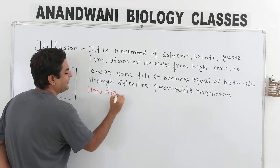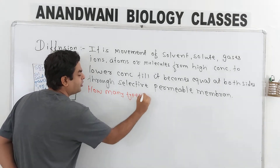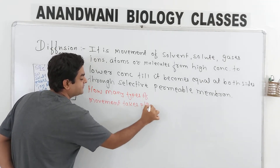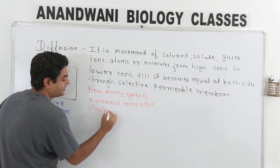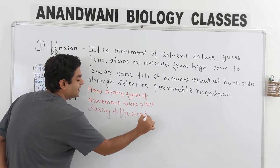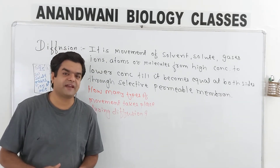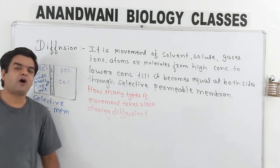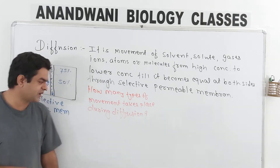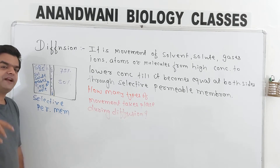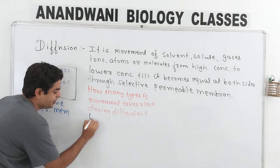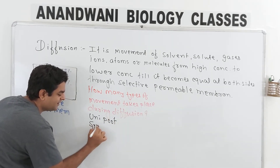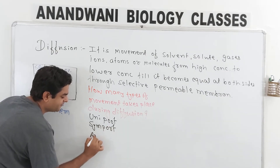Now, how many types of movement take place during diffusion? There are three types: the first one is Uniport, the second one is Symport, and the third one is Antiport.